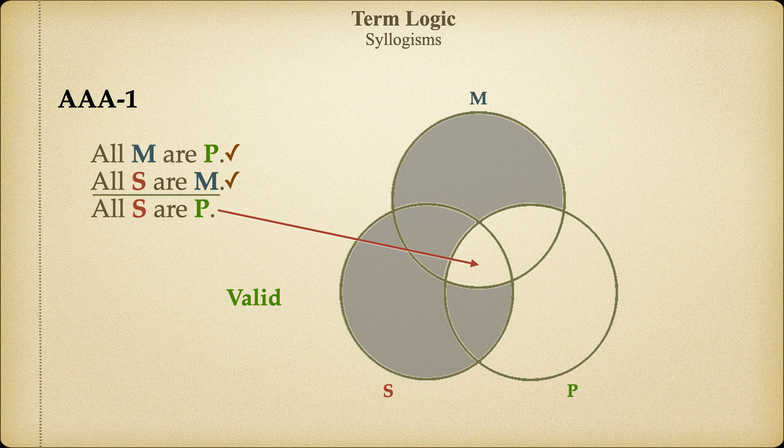The conclusion must be true if the premises are true. We don't know what M, S, and P actually stand for, and it really doesn't matter. What matters is that the form of the argument — the orientation of the major, minor, and middle terms — forces the conclusion to follow from the given premises. No matter what we fill in for the variables, any categorical syllogism of the form AAA-1 will always be valid.